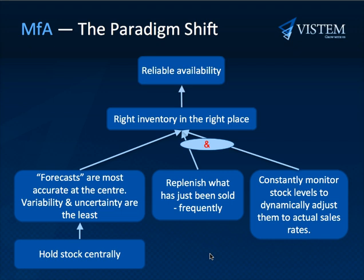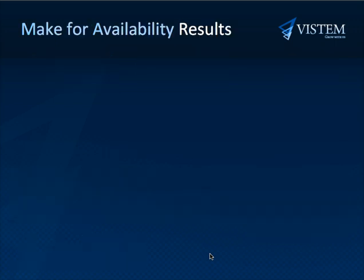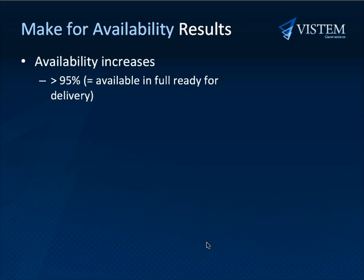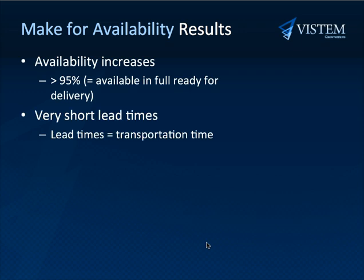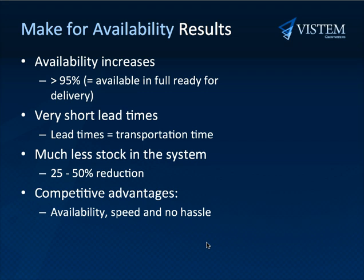We can guarantee immediate and reliable availability, and because we dynamically adjust stock levels, we have less cost and investment too. What results will you get from your efforts? Availability increases to well over 95%, very short lead times at all times, 25 to 50% less stock in the system, the competitive advantage of reliable availability, short lead times and no hassle, and of course profits must then soar.